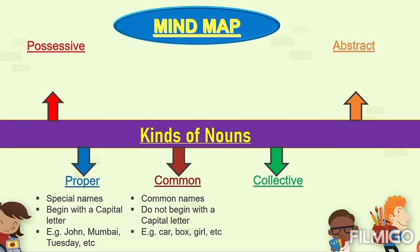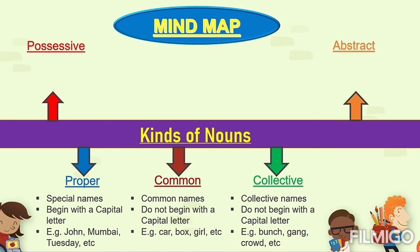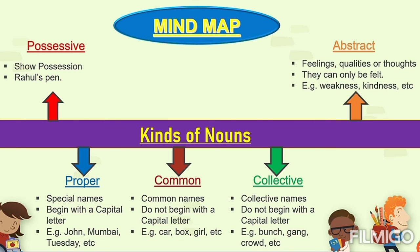Examples of common nouns: car, box, girl, and more. Collective noun: collective nouns always indicate a collection of names and do not begin with a capital letter. Examples: bunch, gang, crowd. Possessive noun: it always shows possession, meaning ownership. Example: Raghul's pen. Abstract noun: it always indicates feelings, qualities, or thoughts — they can only be felt. Examples: weakness, kindness, and more.